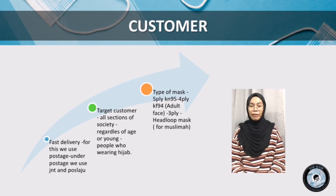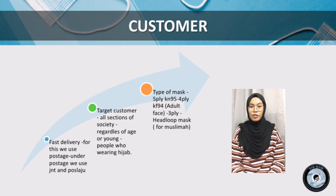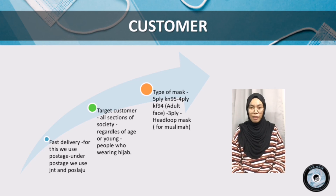Hi, my name is Siti Nurfatiha Binti Sapturani, metric number A21A3455. In this slide I will present about customers. A customer is an individual or business that purchases another company's goods or services. Customers are important because they drive revenues — without them, businesses cannot continue to exist. Firstly, fast delivery: we use postage services J&T and Post Laju. Secondly, our product is a Facemask that can be used by all sections of society regardless of age, and we also sell masks for people who wear hijab. Thirdly, we have many types of masks: 5-ply KN95, 4-ply KF94, 3-ply, and an ear-loop plus option for people who wear hijab.